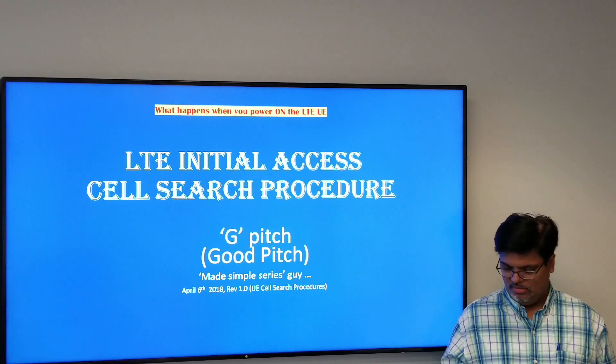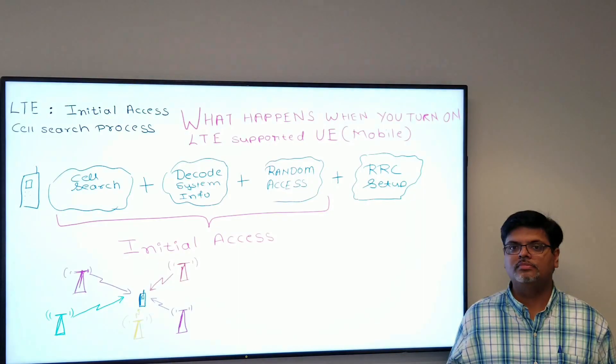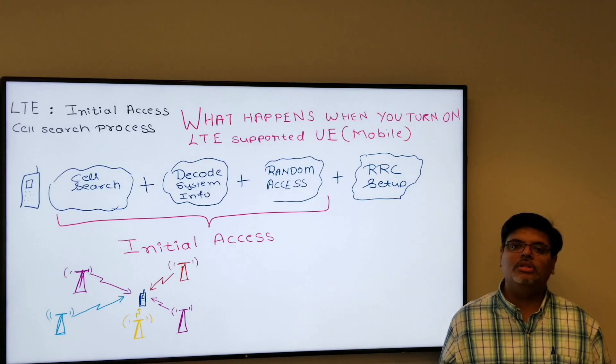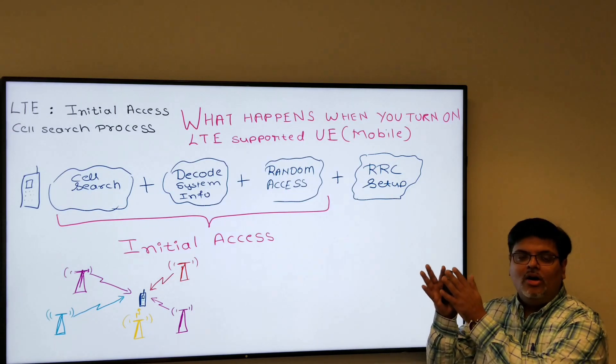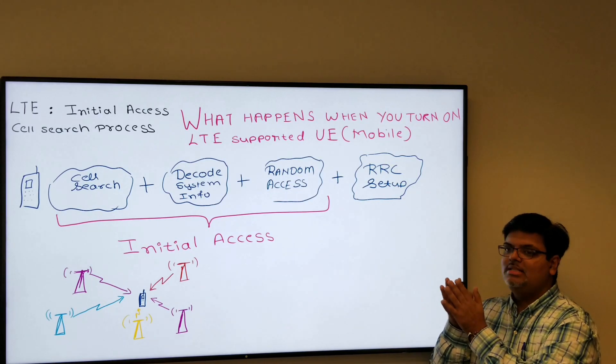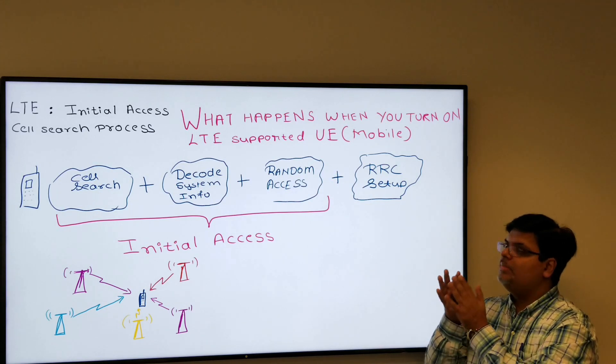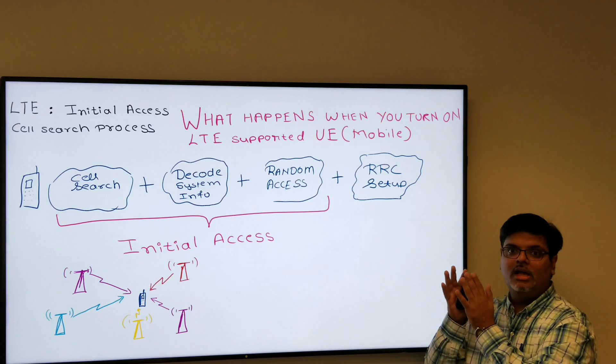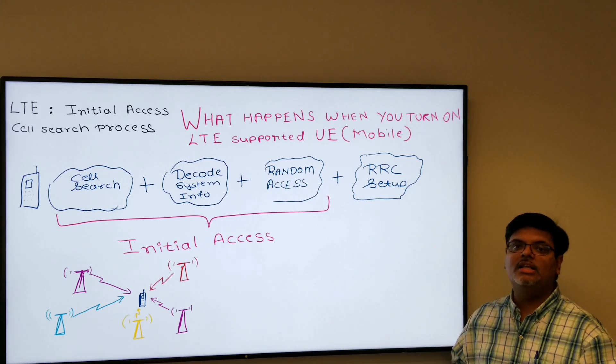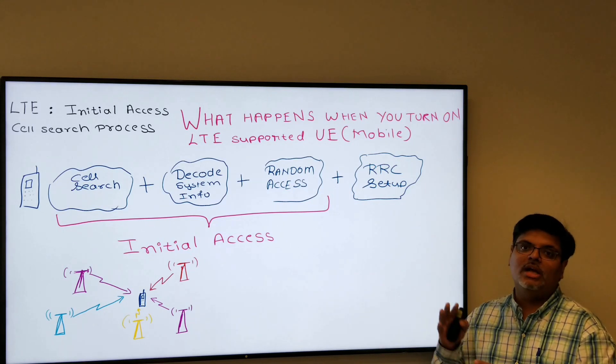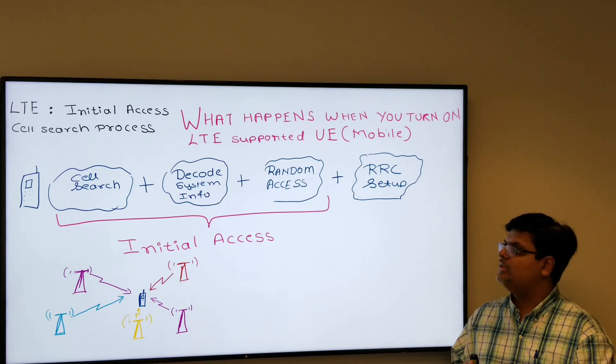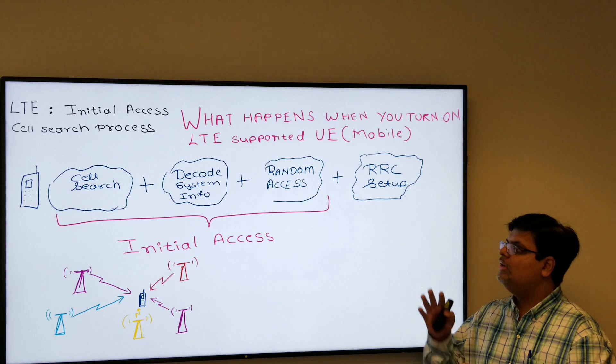Before the UE goes and actually attaches onto the network, it has to first go through four different processes: cell search, decode system information, random access, and RRC setup. After going through all these four processes, it's only after that the LTE UE attaches to the LTE network.